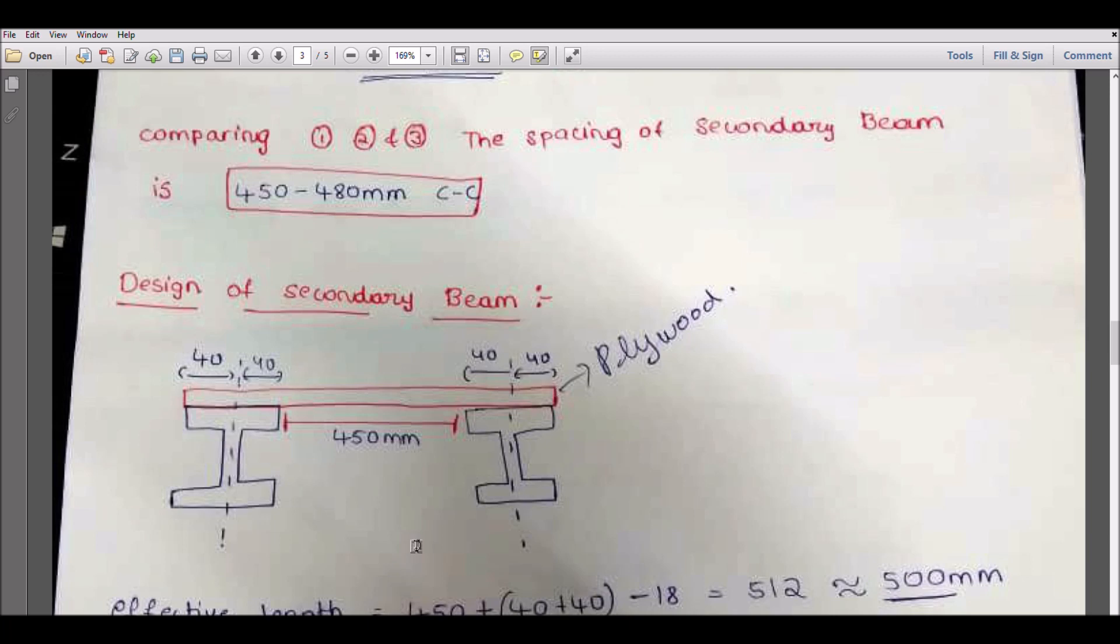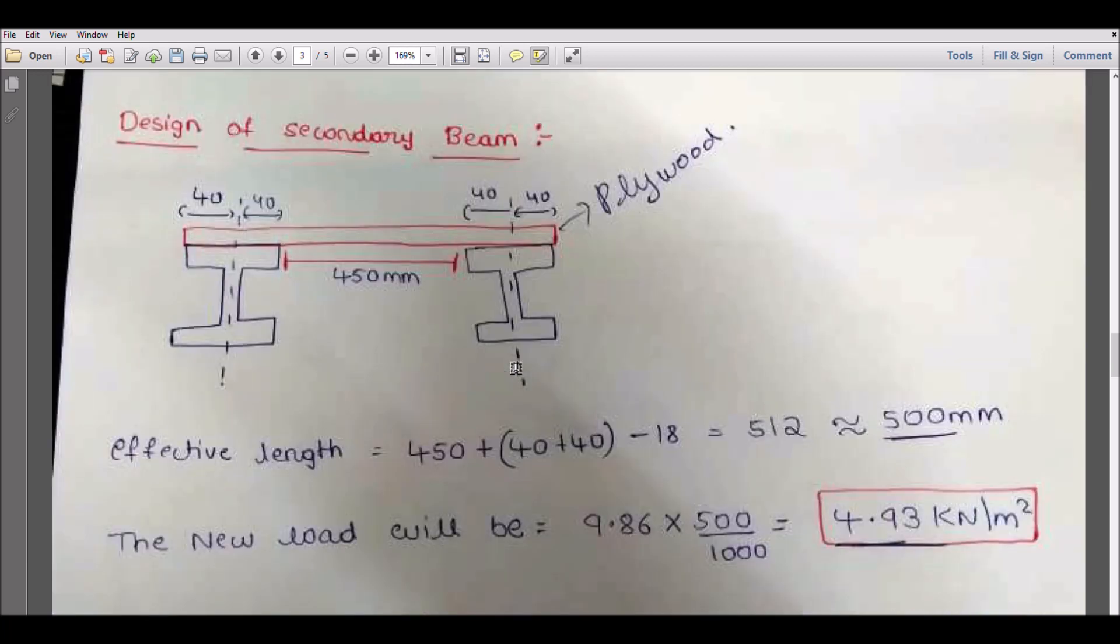In this drawing, I will show how we have to consider. This is our plywood, but here I mentioned one wrong thing. This is not 450 here; 450 is from center to center of the timber beam. So 450 is from this part to this part. This is 80mm width, so if you place it in the center, it will be 40, 40. Total length will be 450 plus 40 plus 40. That only we can say as effective length, then minus 18 because of the plywood.